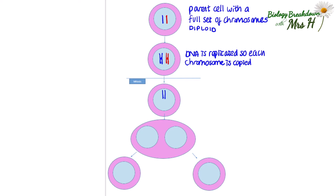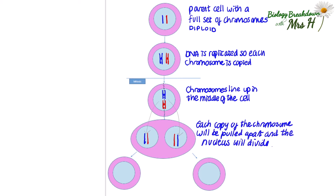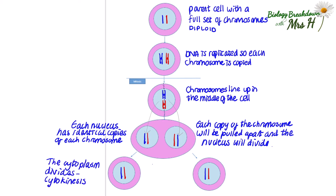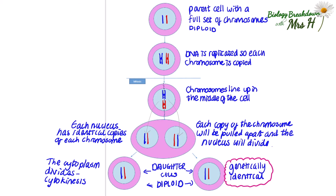When mitosis continues to happen, the chromosomes line up in the middle of the cell and then each copy of the chromosome will be pulled apart and the nucleus will divide. Each nucleus has identical copies of each chromosome and then the cytoplasm splits to create two identical daughter cells — the splitting of this cytoplasm is called cytokinesis. They each have a full set of chromosomes and are said to be diploid, so they are genetically identical to each other and the parent cell.